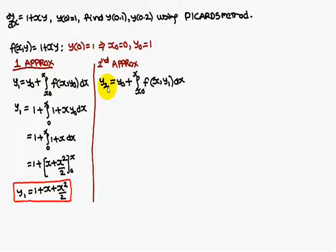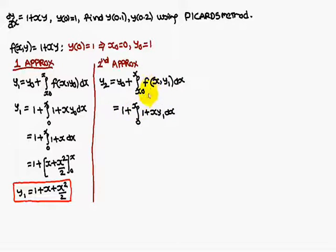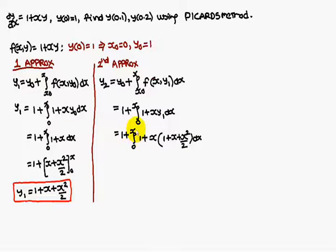Now find the second approximation. y2 is equal to y0 plus the integral from x0 to x of f(x, y1) dx. That is 1 plus the integral from 0 to x of 1 plus x·y1 dx. In place of y1, you write 1 plus x plus x²/2.